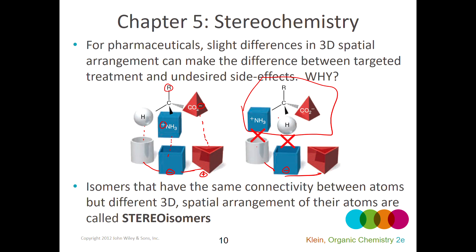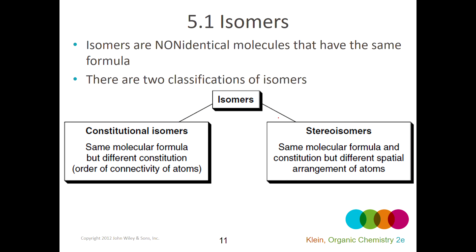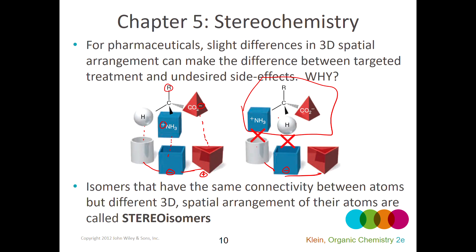We want to talk about how to identify when a molecule can have spatial specificity. If a carbon has four different groups attached to it, because it's tetrahedral there are two different ways to arrange those groups around the carbon spatially. If you swap group two and group three, you get a different spatial arrangement. We need to identify when that's possible and learn the terminology and practical ways to identify when we have the right molecule with the right spatial arrangement.